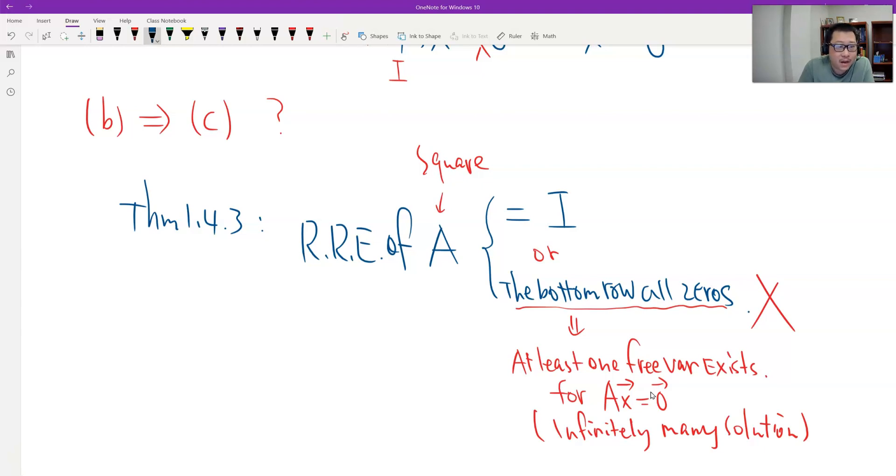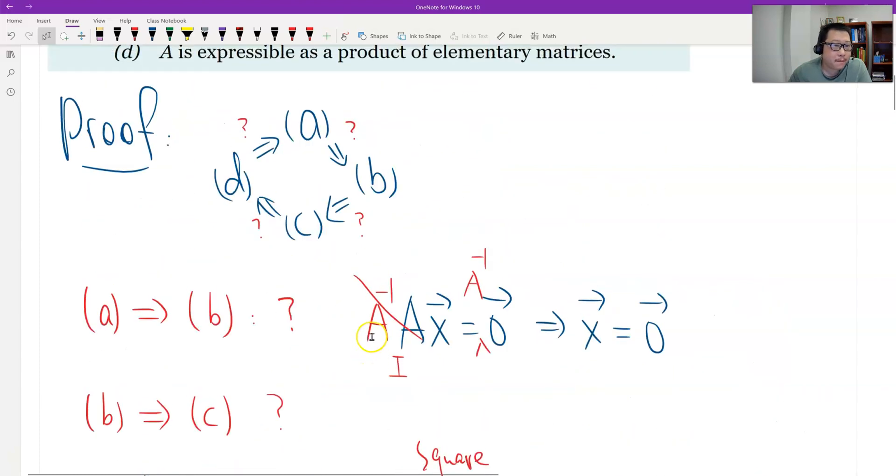So what do we get? So finally we have this. So the reduced row echelon of A should be equal to identity. Of course the size is n. That's C. So C is proved.